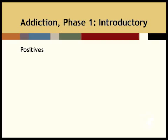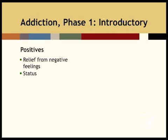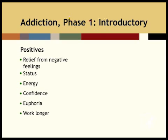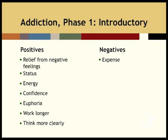In this phase, the positives of using still outweigh the negatives. When a person uses drugs, he or she may have many positive reactions. For example, methamphetamine gives the person relief from negative feelings, increases a sense of status, energy, and confidence, provides euphoria, and increases the person's ability to work longer and think more clearly. At first, the negative aspects are few. Drugs are expensive and illegal and can cause a person to miss work.